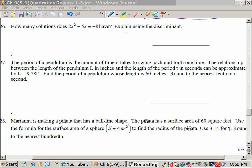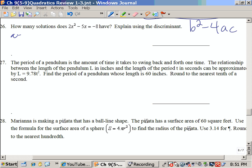Now I'm asked to find how many solutions using the discriminant, and the discriminant is b squared minus 4ac. a is 2, b is negative 5, and if I move the 8 to the left putting it into standard form, c is 8.